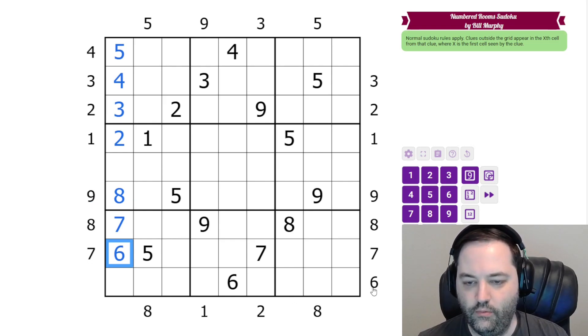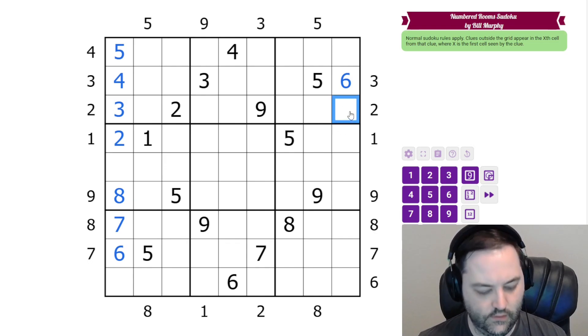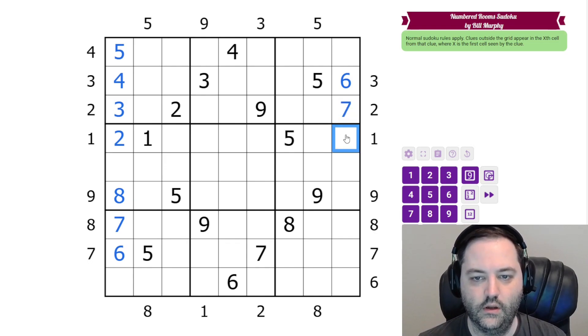Continuing with the rows, but from the other direction. So we already looked at 3 from this direction, but from this direction it's 1, 2, 3, 4, 5, 6 away. So that's a 6. The 2 is now 7 cells away, and the 1 is 8 cells away. The 9 is in the second cell, 8 is in the 3rd, 7 is in the 4th, and 6 is in the 5th.